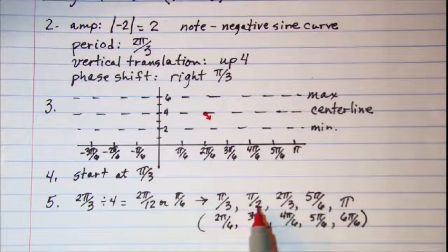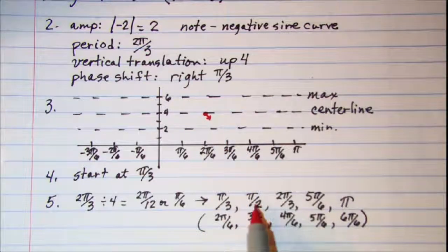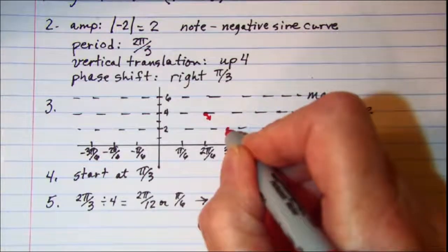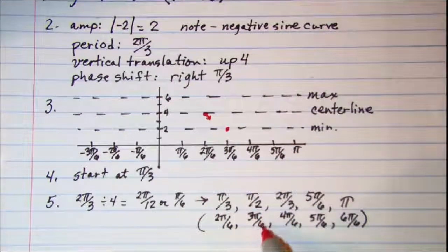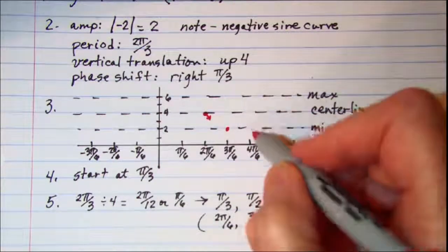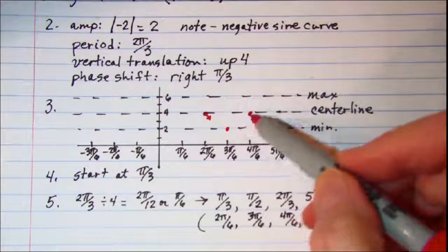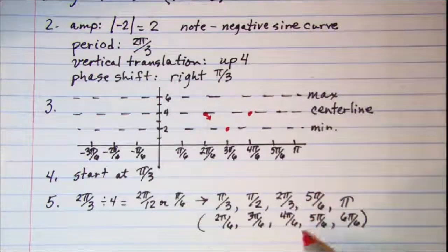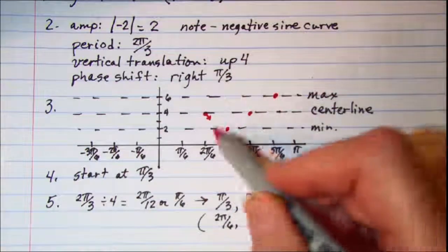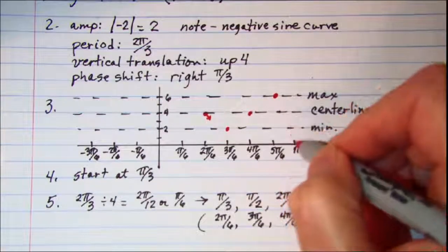My next mark is going to be at the minimum since I'm heading down and it'll be at 3 pi over 6 which is pi over 2, and then my next mark which will be back up at the center line will be at 4 pi over 6, and then I'll head up to the maximum and that'll be at 5 pi over 6, and then back down to the center line at 6 pi over 6 which is pi.